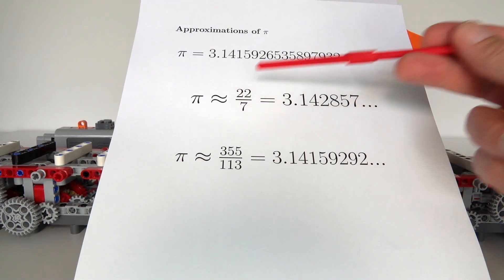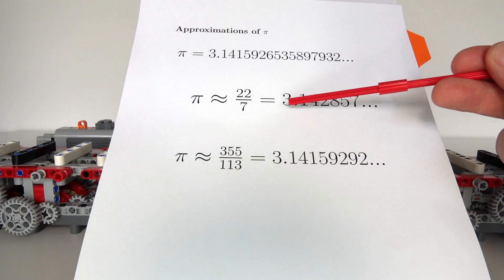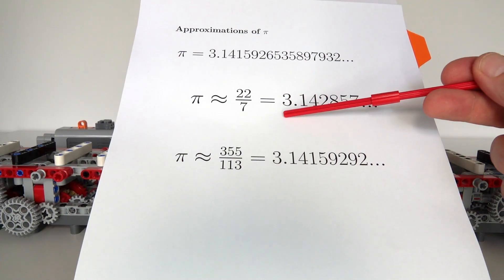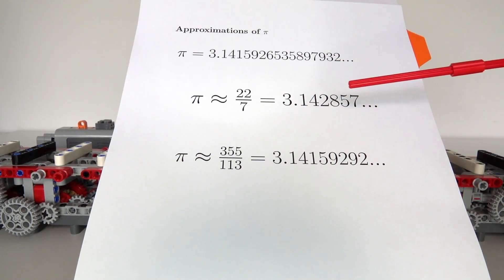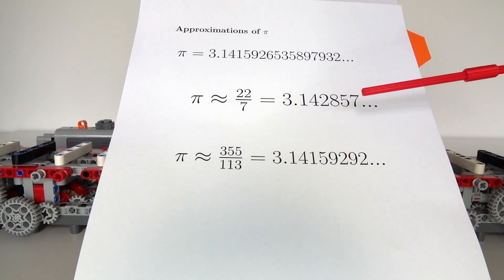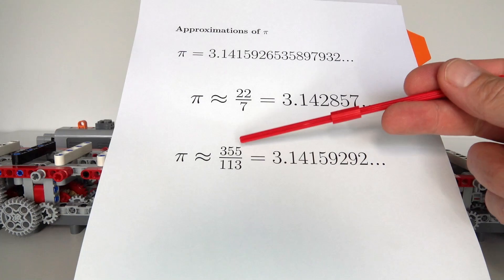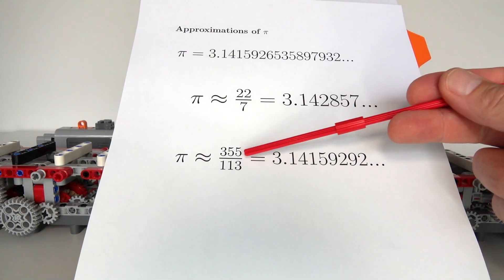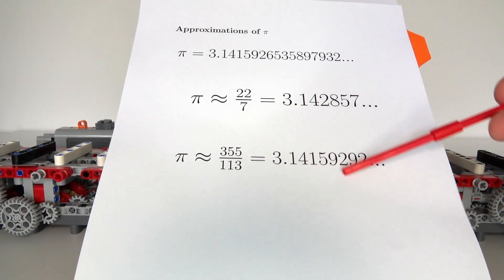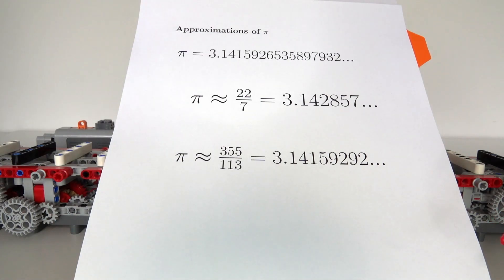One way of doing that is to use a fraction like 22 over 7, which gives you Pi to 3 significant figures, 3.14. However, in many engineering mathematical applications, you need a more accurate approximation. One fraction that's pretty good is 355 over 113, which gives you Pi to about 6 or 7 significant figures, which is the ratio I used last year for the Pi Day celebration.